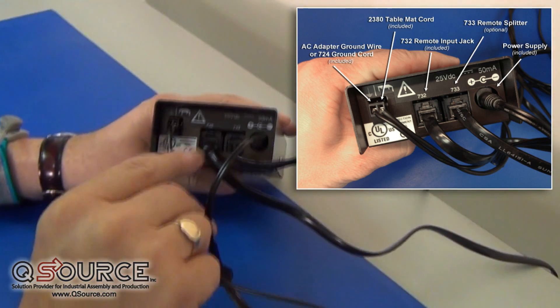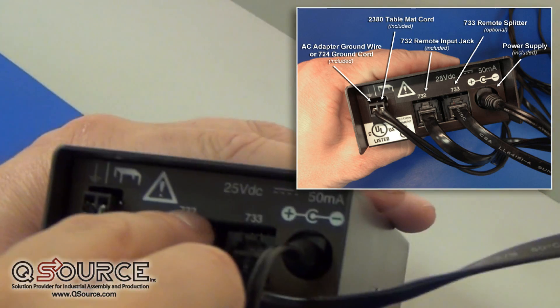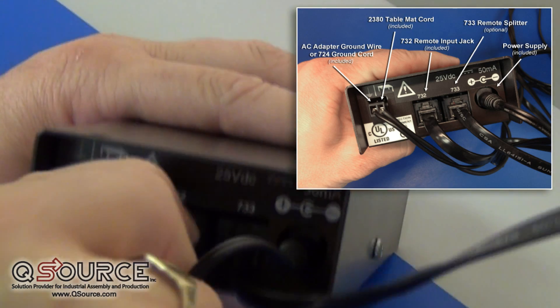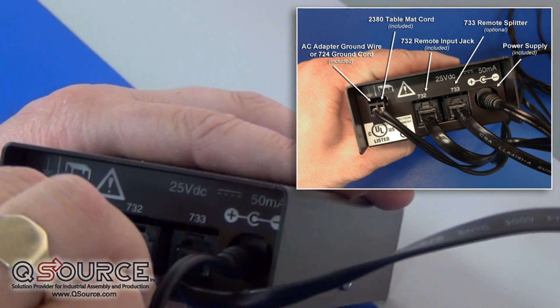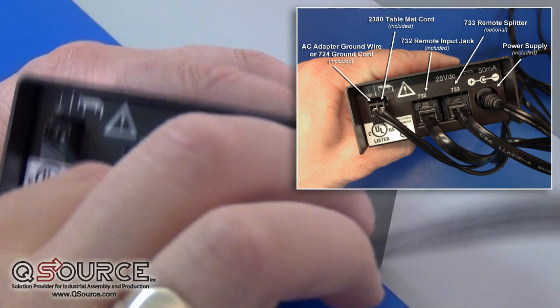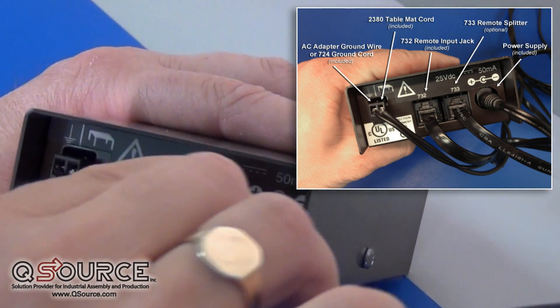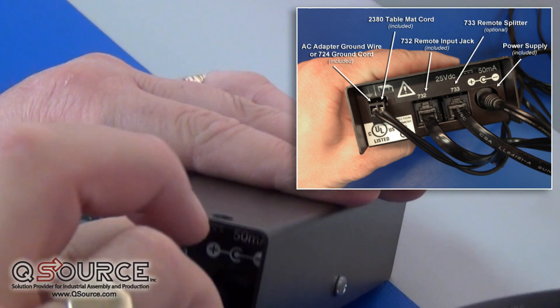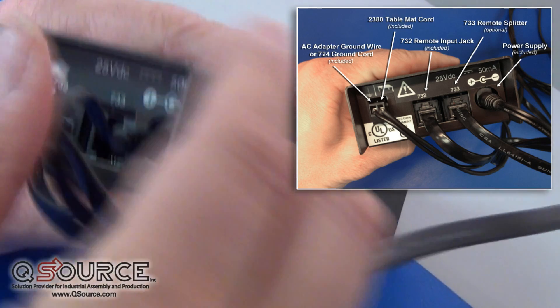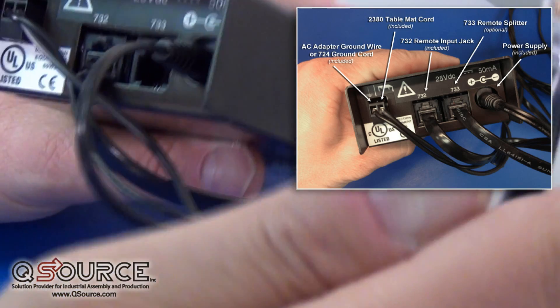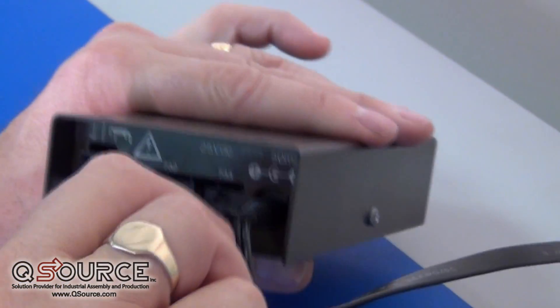And then additionally, we have the ability to plug in the model 732, part number 732, which comes with the 724. This is for operator one. And their optional model, part number 733, which is a phono plug that plugs in to allow a second operator to be monitored at the same time.